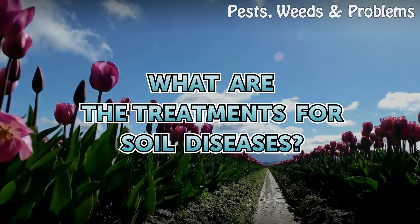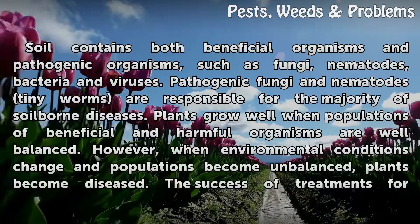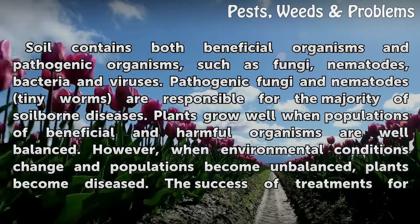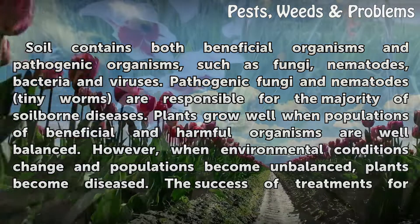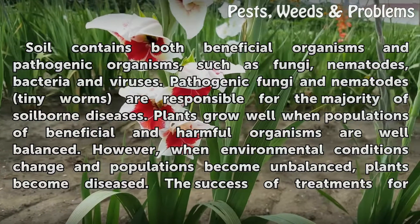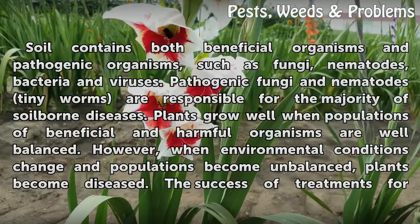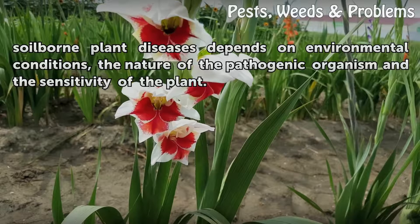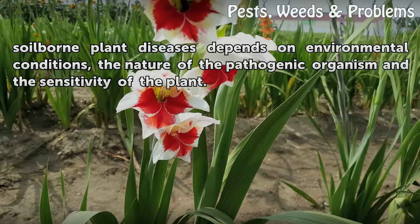What are the treatments for soil diseases? Soil contains both beneficial organisms and pathogenic organisms such as fungi, nematodes, bacteria, and viruses. Pathogenic fungi and nematodes — tiny worms — are responsible for the majority of soil-borne diseases. Plants grow well when populations of beneficial and harmful organisms are well balanced, but when environmental conditions change and populations become unbalanced, plants become diseased. The success of treatments depends on environmental conditions, the nature of the pathogenic organism, and the sensitivity of the plant.